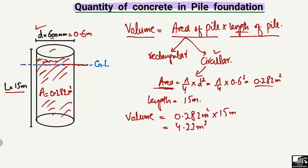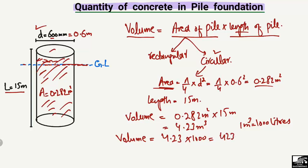Now, how do we convert this volume of concrete into liters? On a practical construction site we mostly deal with liters. Since one cubic meter equals 1,000 liters, we multiply 4.23 by 1,000 to get 4,230 liters. So 4,230 liters of concrete is required for this pile with a length of 15 meters and a diameter of 0.6 meters.